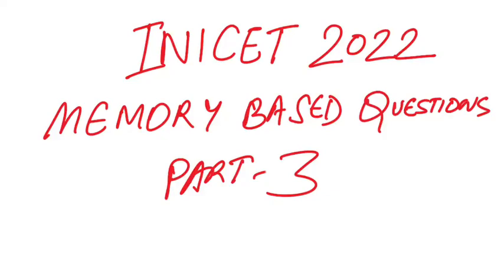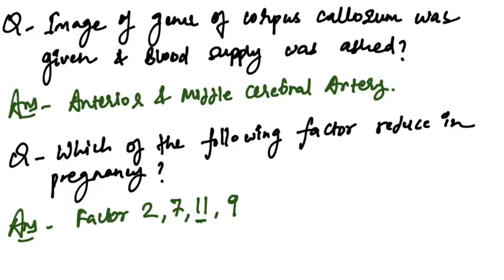Hello and welcome doctors to Part 3 of memory-based questions of IONIZED CT 2022. The first question showed an image of the genu of corpus callosum and asked for the blood supply to that area. The answer is anterior and middle cerebral artery, as it supplies the genu of corpus callosum.